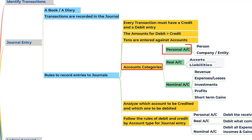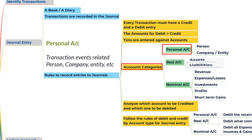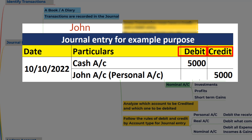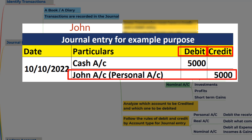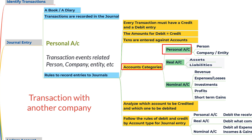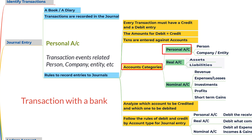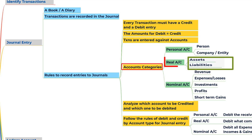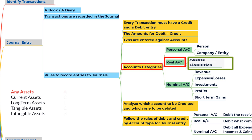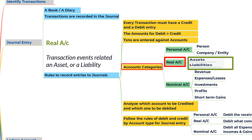For personal accounts, any transaction event related to a person, company, or entity falls under this category. For example, a transaction with John, with another company, or with a bank all come under personal accounts because a bank is an entity. For real accounts, transaction events related to assets and liabilities fall here — whether tangible or intangible assets, or any liabilities.